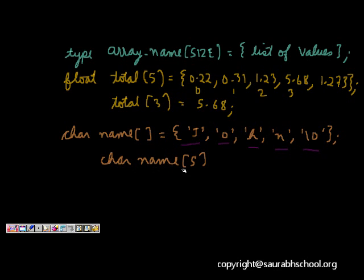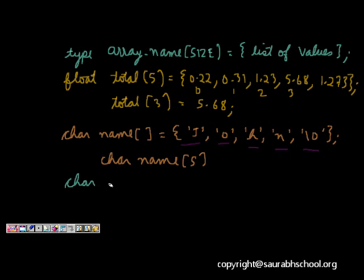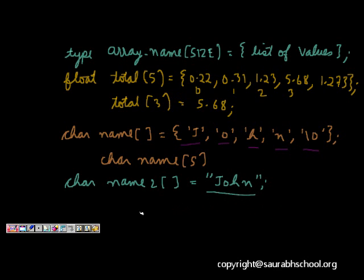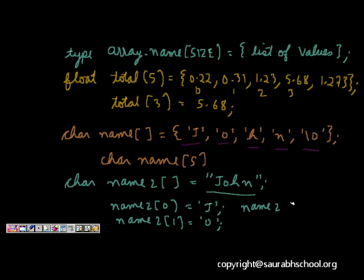Another way to write this is char name2[] = "john". This is exactly similar: name2[0]='j', name2[1]='o', name2[3]='n', and name2[4]='\0'. This is the initialization of a character array.